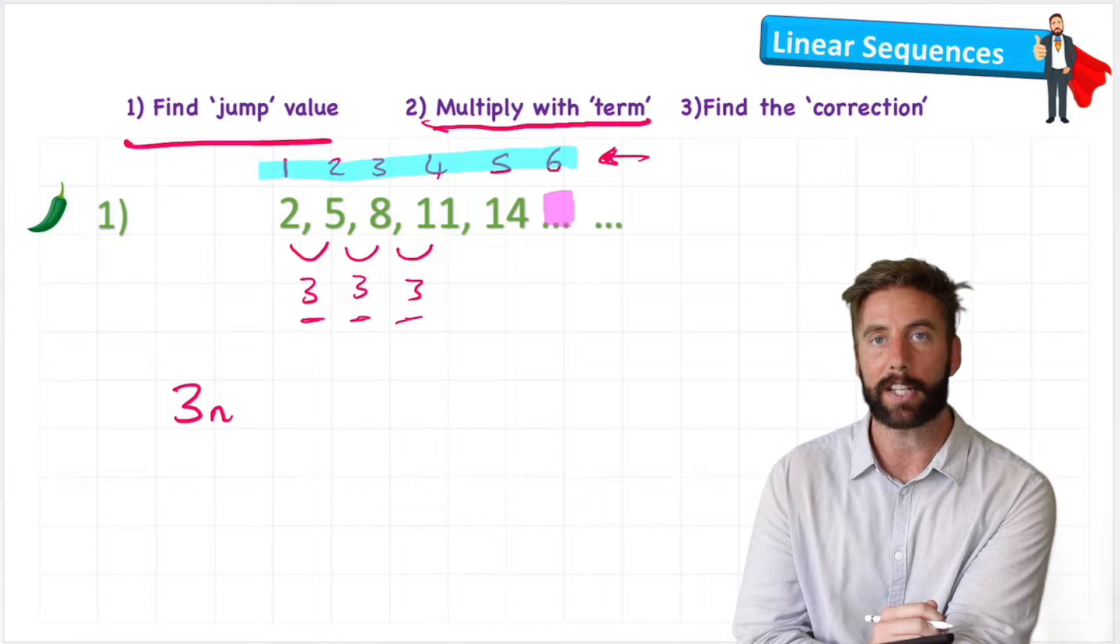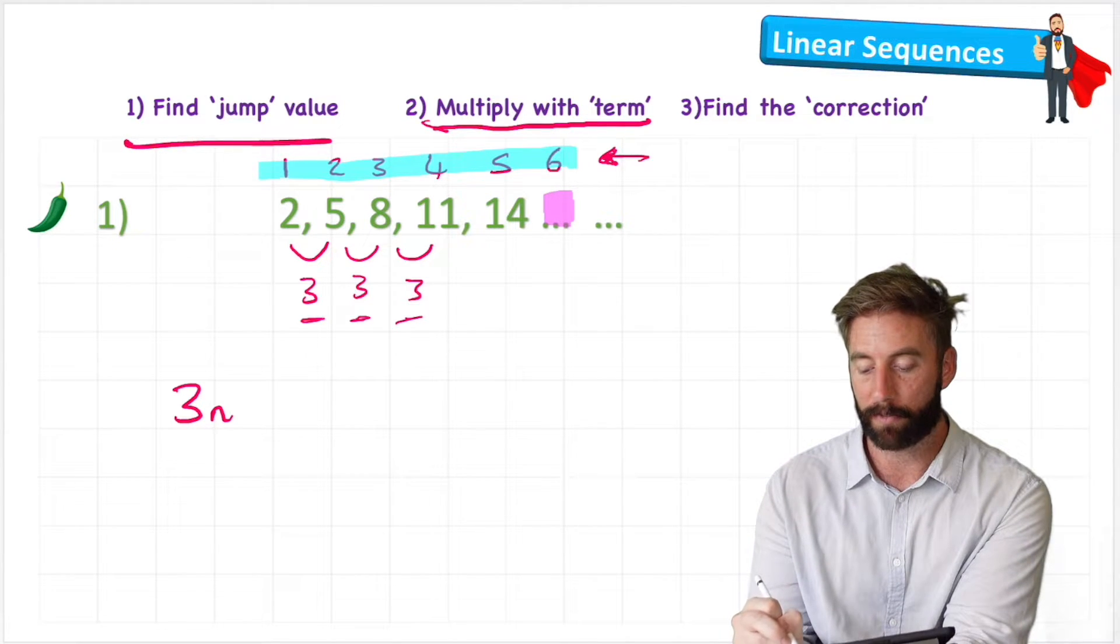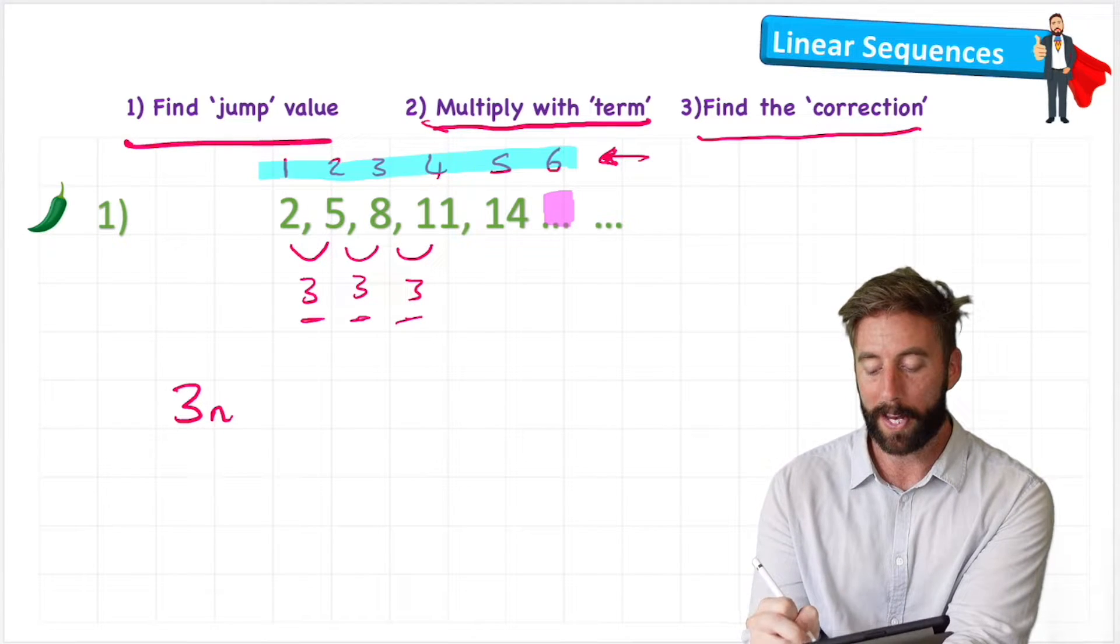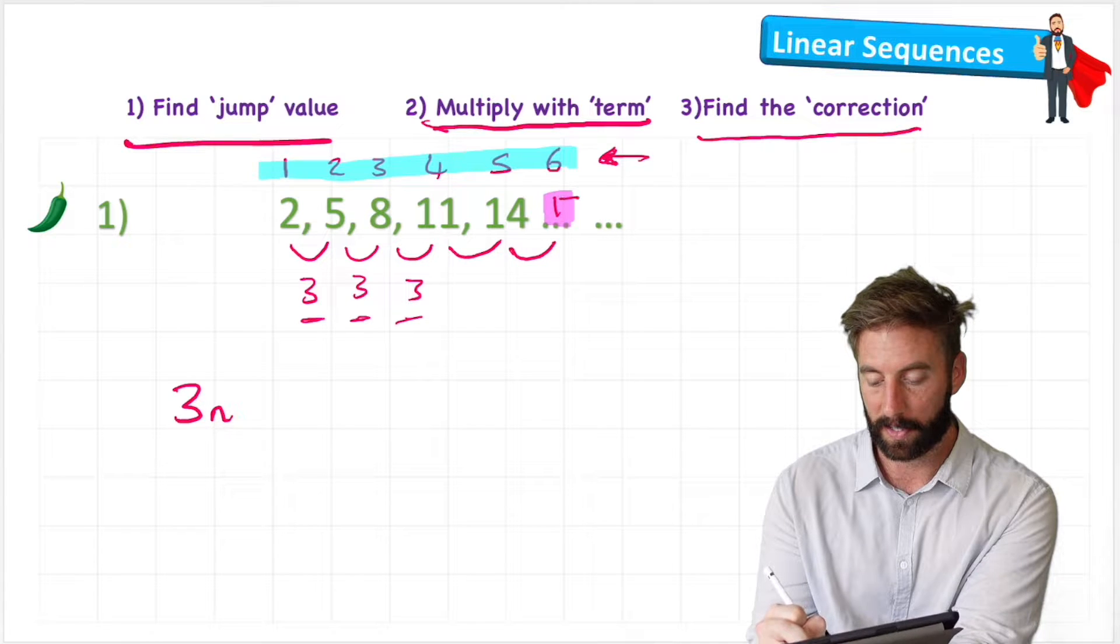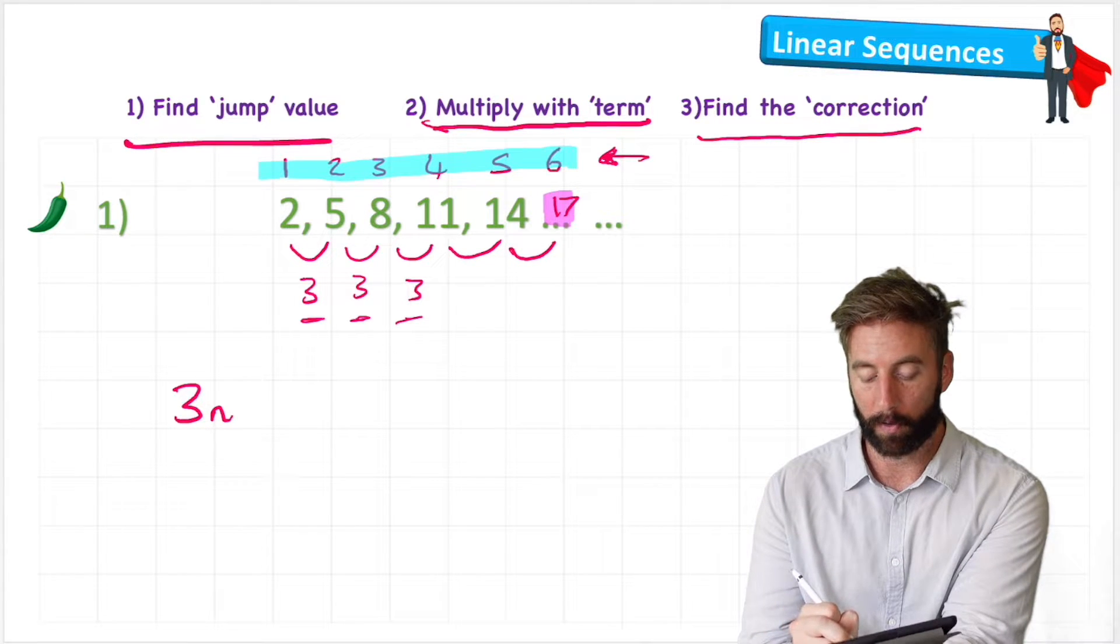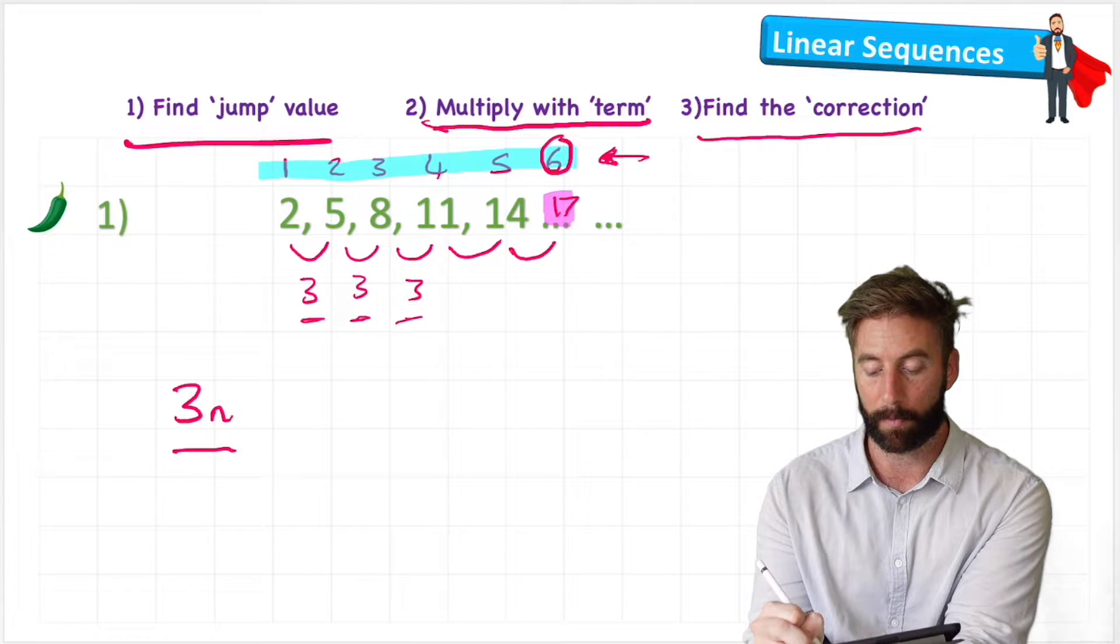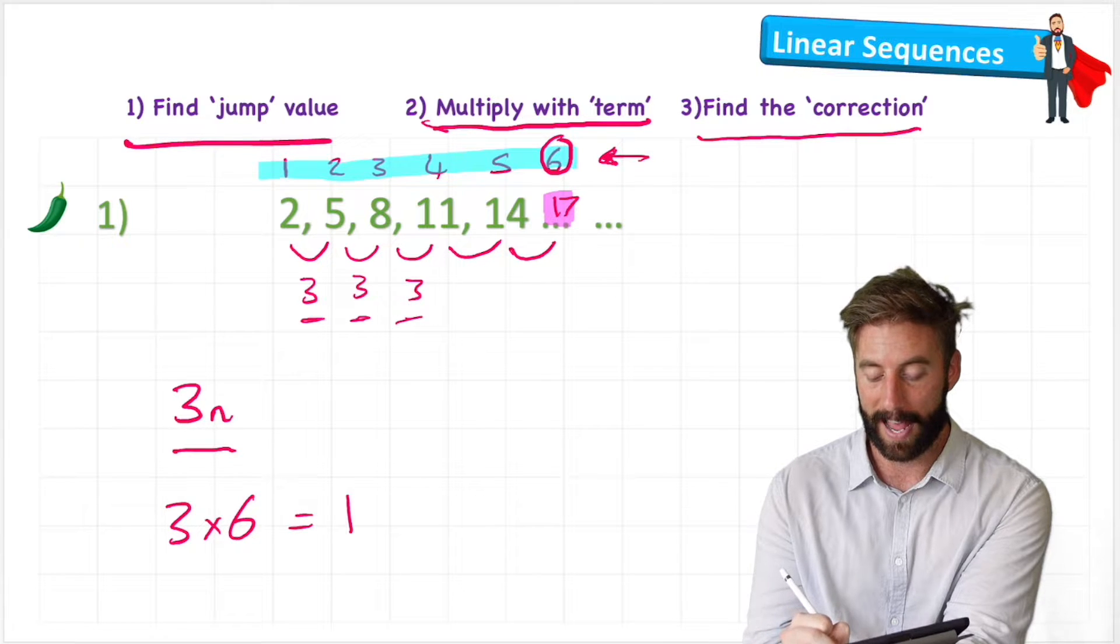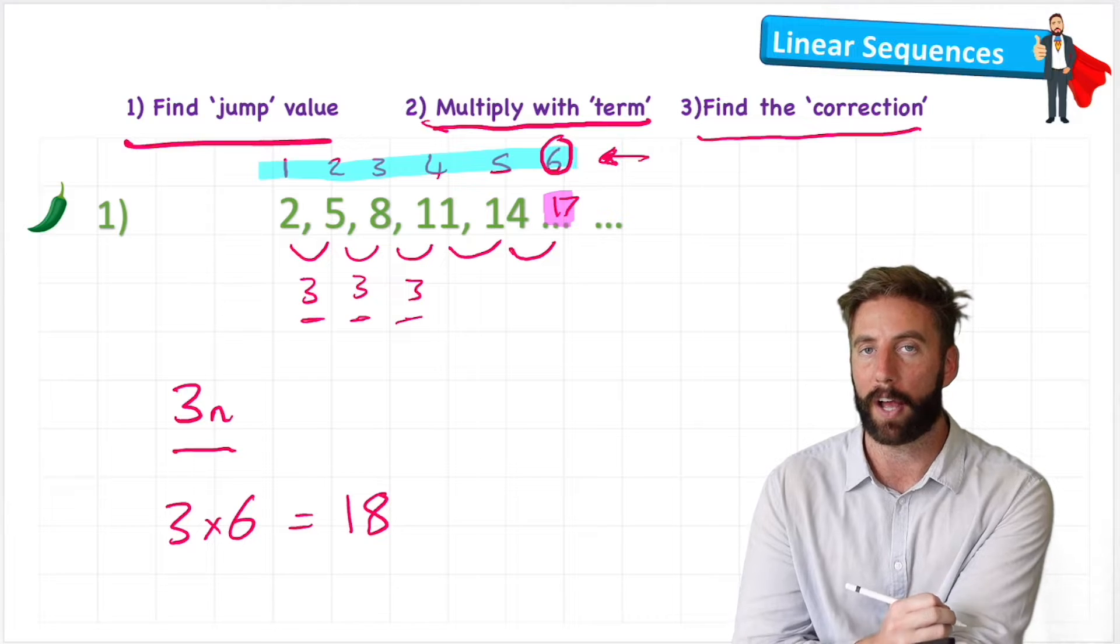But like I say, that's going to be close to our number, but not bang on. So then we need to find the correction. Let's see what I mean there. So we know that the next number after 14 will be 17. But so far, all I've got in my formula is 3n. So 3 times the number value, which is 6. If I do 3 times 6, I get 18. 18 is very close to 17, but not quite right.